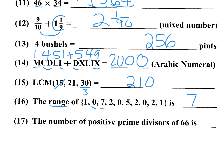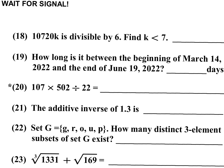Number 17 is the last one in the first column: the number of positive prime divisors or prime factors. The word prime changes the problem — if you don't read prime, you'll get a different answer. You have 2 times 3 times 11, which gives you three prime factors. Number 18: 10,720K is divisible by 6. Find K less than 7. I add 1 plus 7 plus 2, that's 10. 10 plus K must be divisible by 6, so K equals 2, because 12 is divisible by 6.